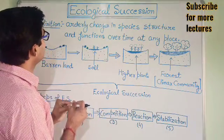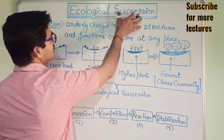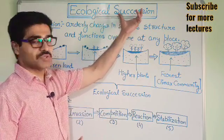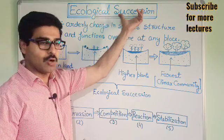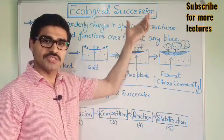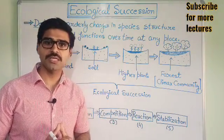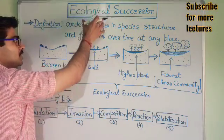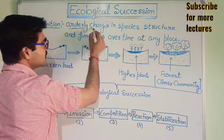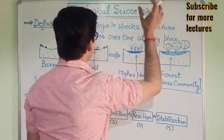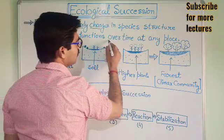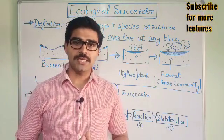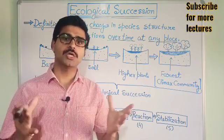The word 'ecological' is related to the ecosystem, and 'succession' means advancement. Ecological succession is defined as the orderly changes in the species structure and functions over time at any place. Simply put, ecological succession means the advancement of the ecological community.